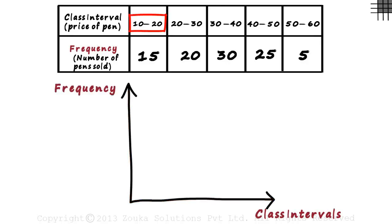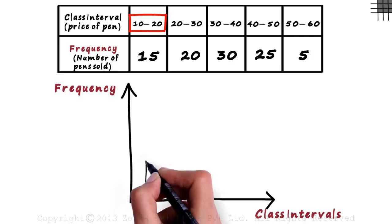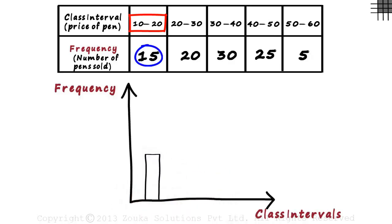For the interval 10 to 20, we draw a bar to represent 15 pens. For 20 to 30, we draw a bar to represent 20 pens.